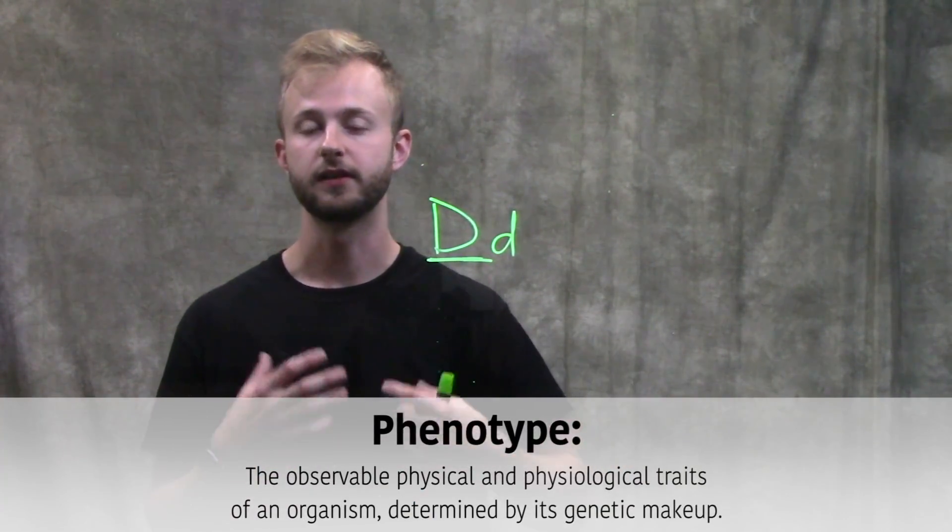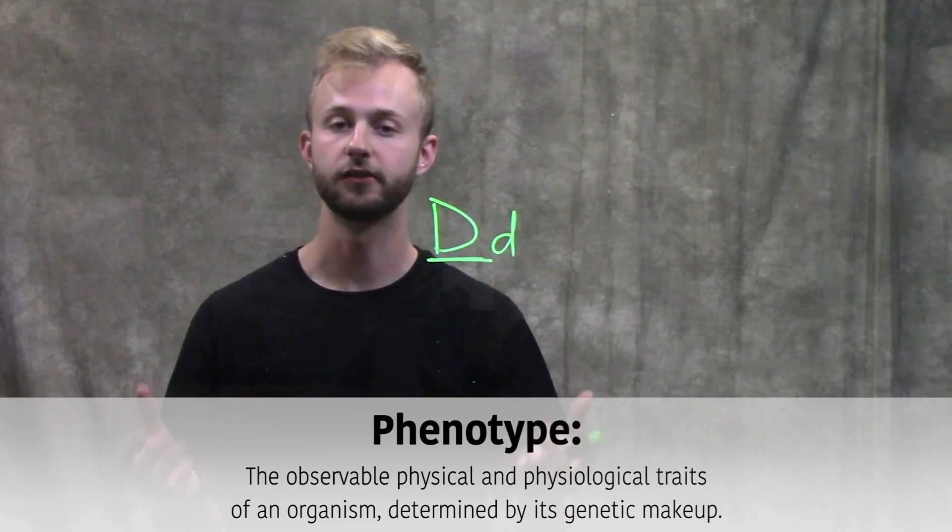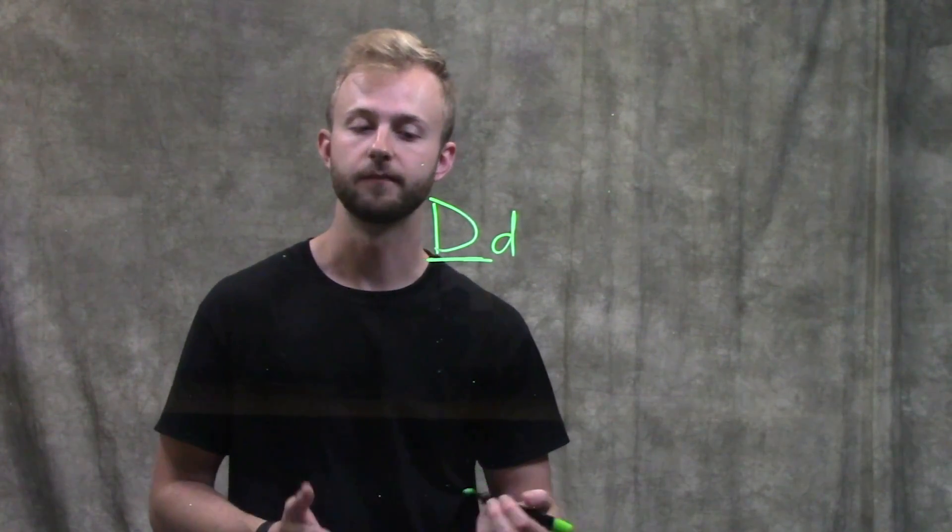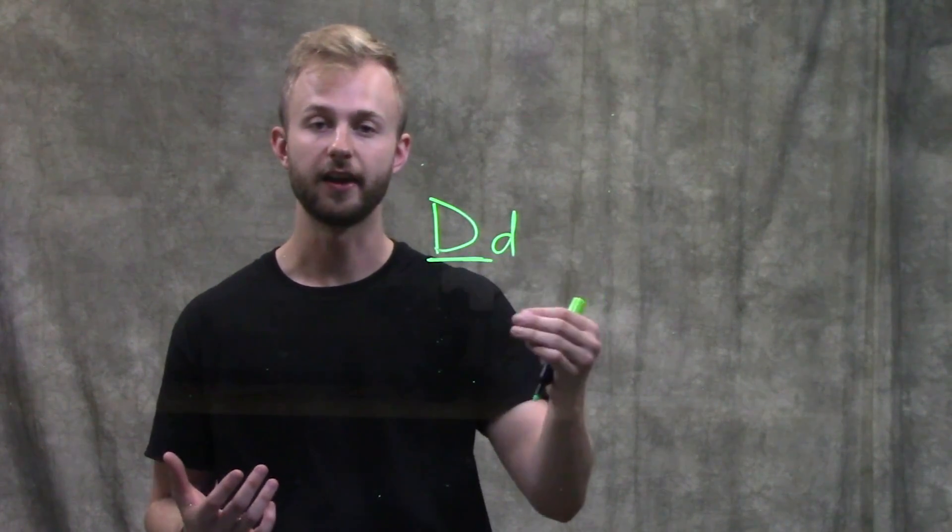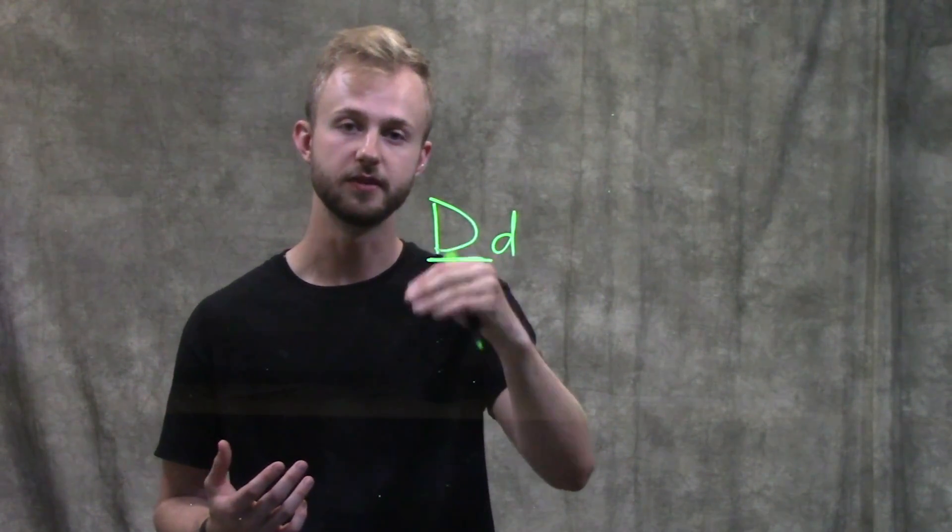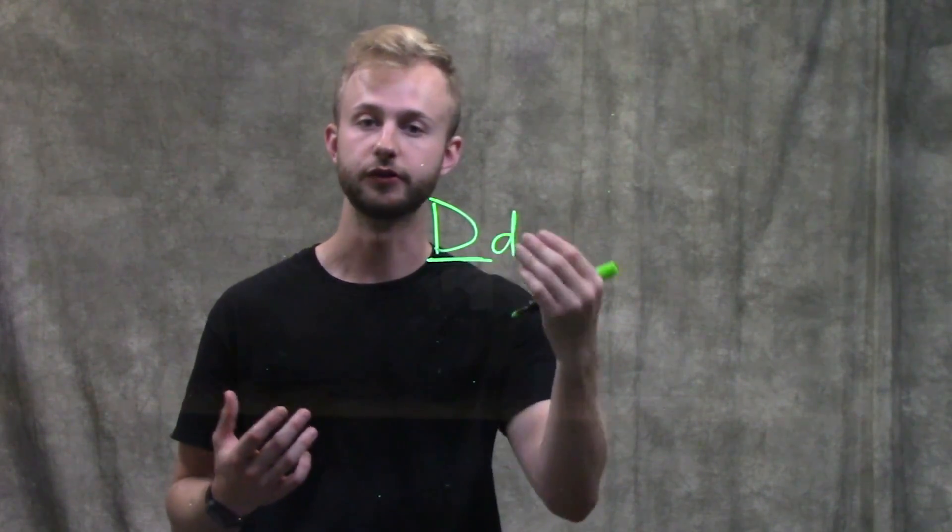A phenotype is the actual appearance of an organism—the outward appearance. For example, if we're talking about hair color, brown hair would be dominant to blonde hair, which would be recessive.